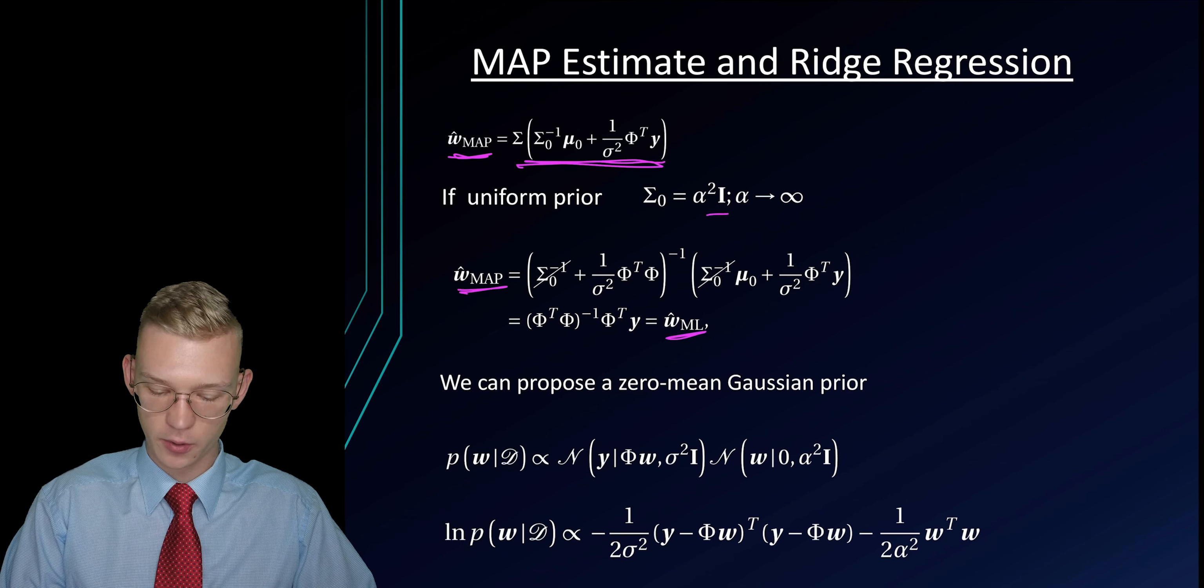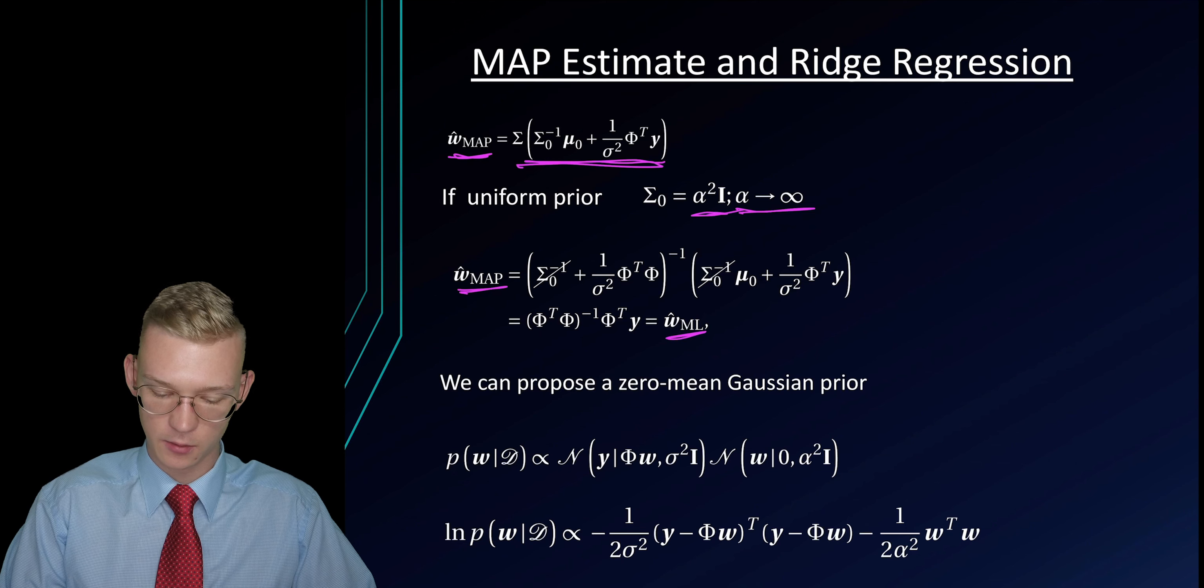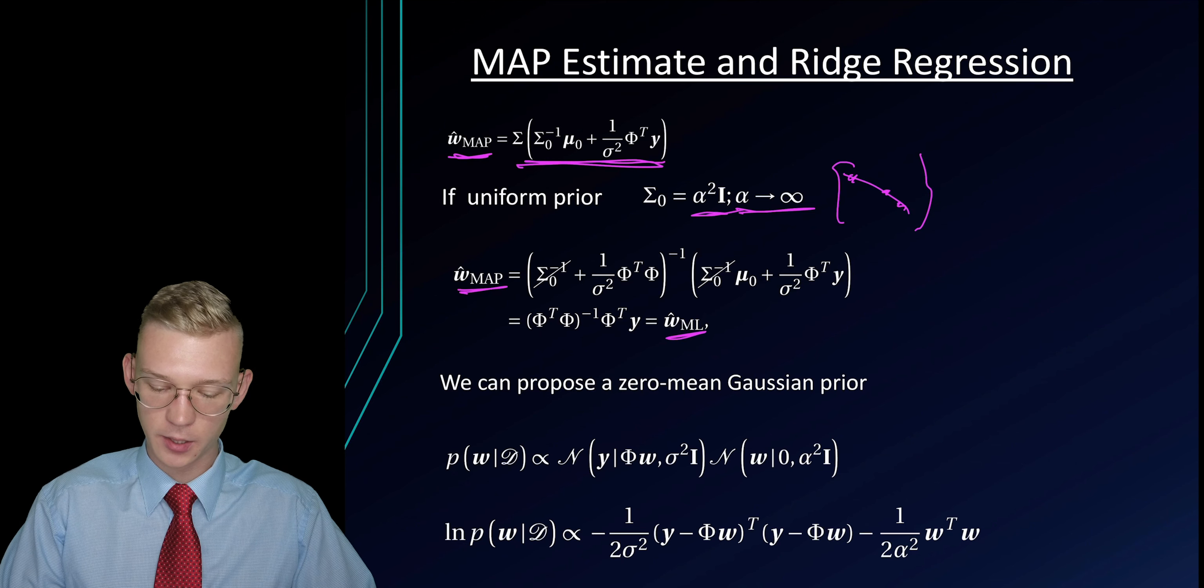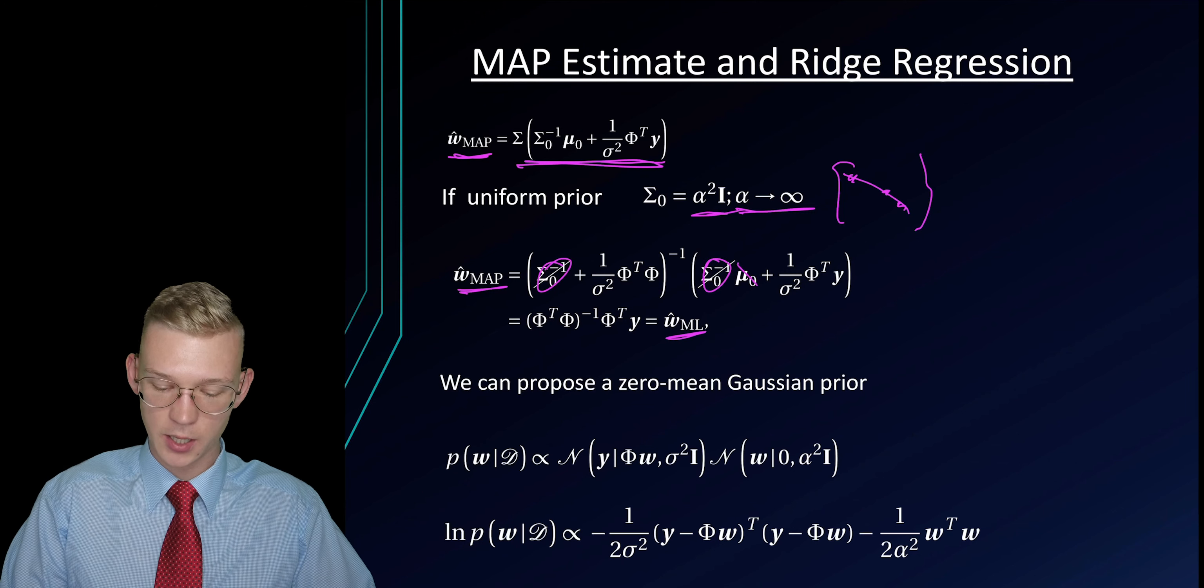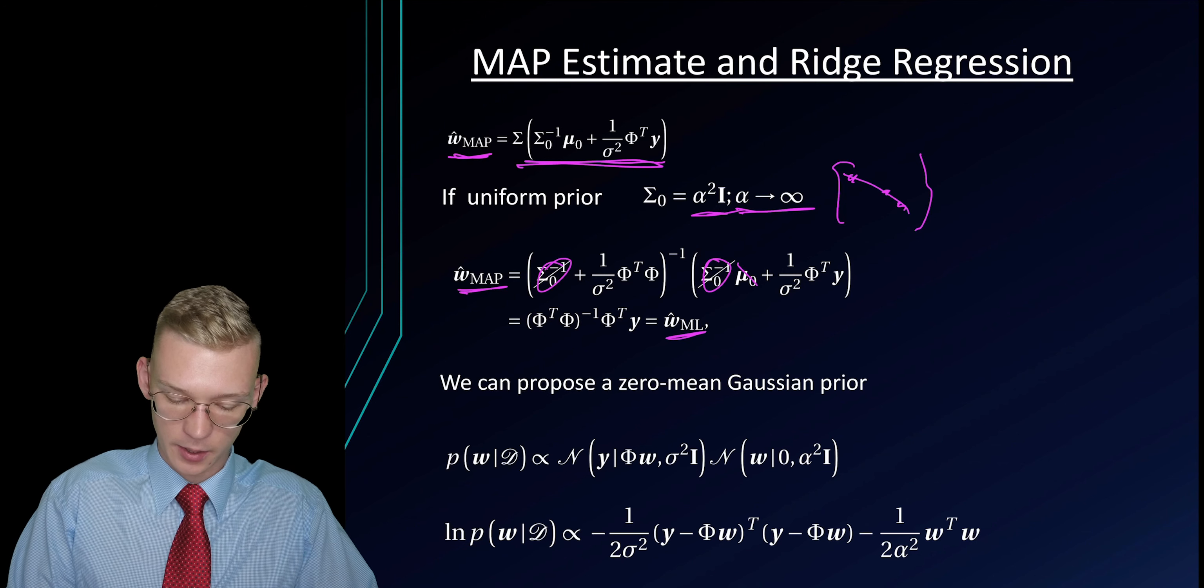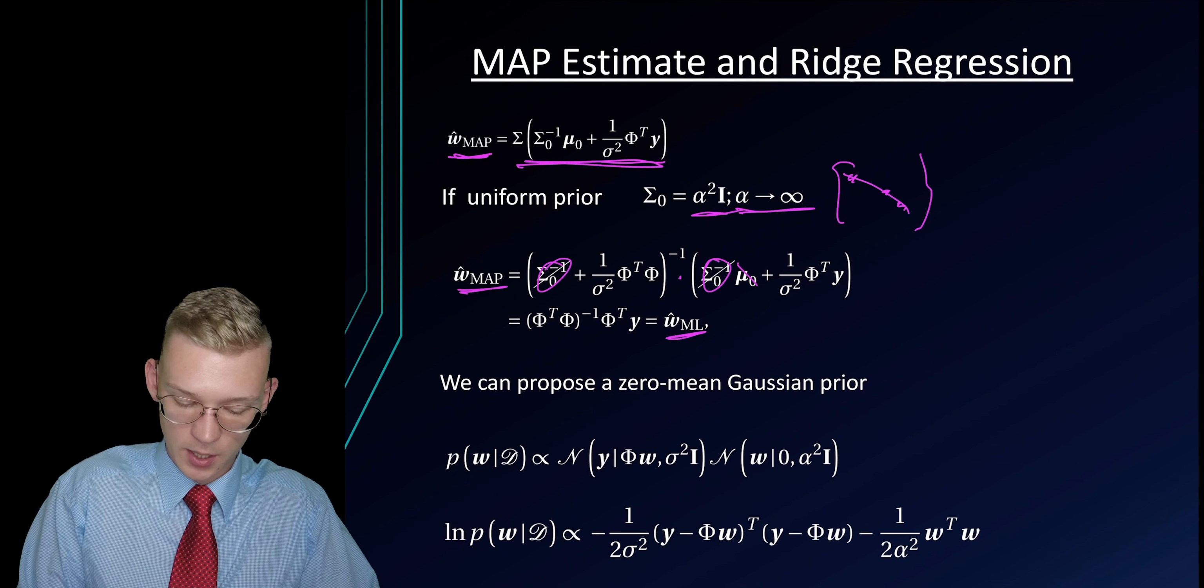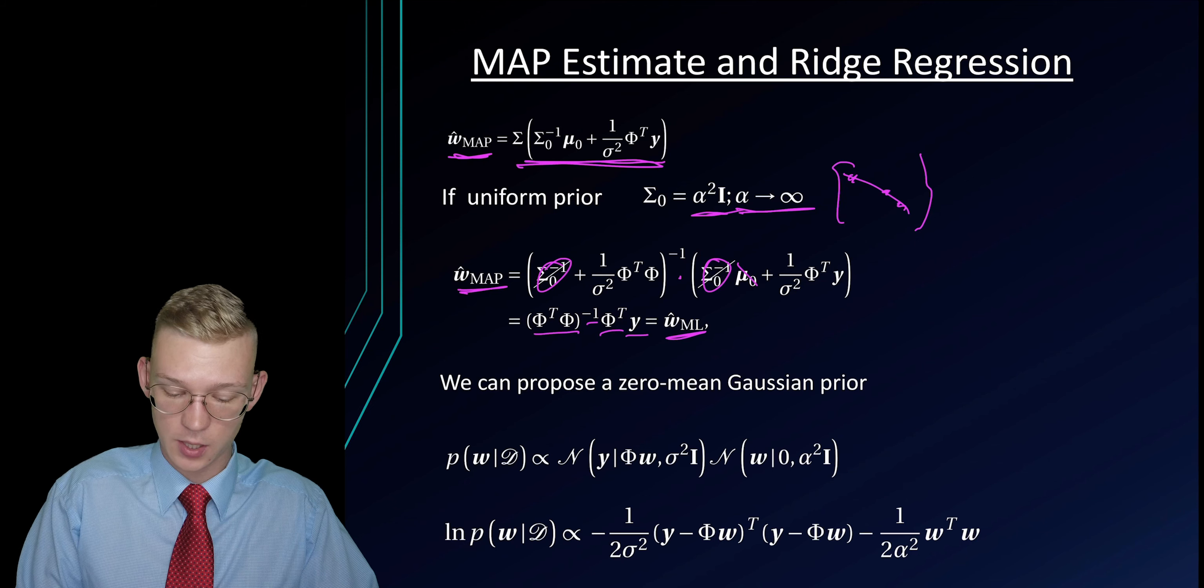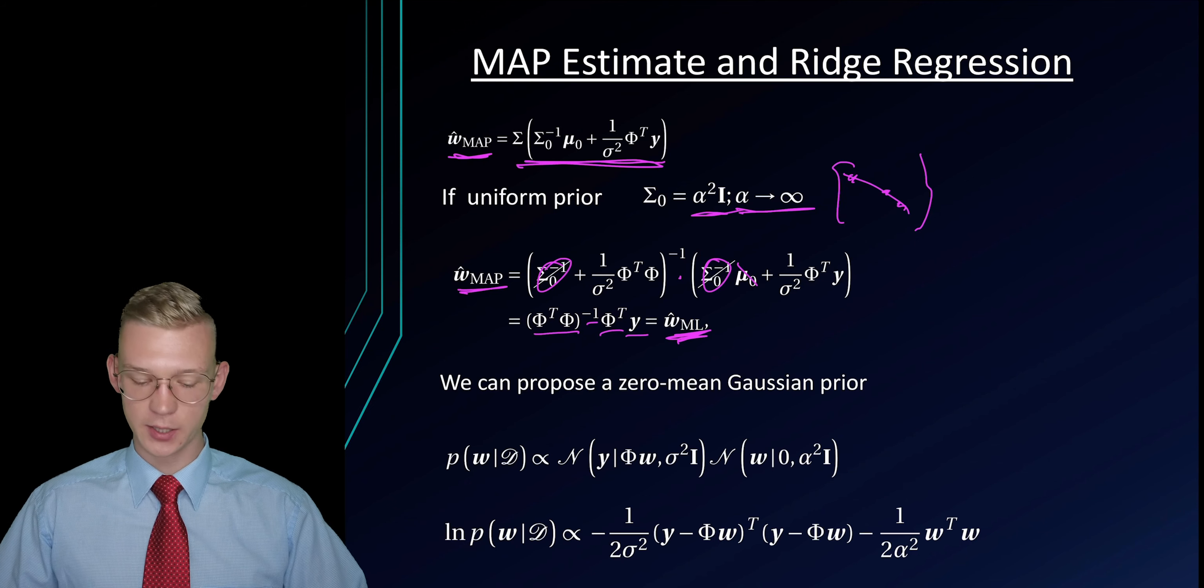If our variance goes to infinity, it's just a diagonal matrix with very high values on the diagonal. If we invert that, we will get a zero matrix here, it will cancel out the µ. If we multiply these terms together, we get phi transposed phi to the power of minus 1 phi transposed times y. This is exactly the term that we got from the linear least squares.